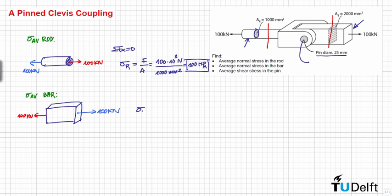Then we know that the average normal stress in the bar is equal to the force divided by the area, so this is equal to 50 MPa.